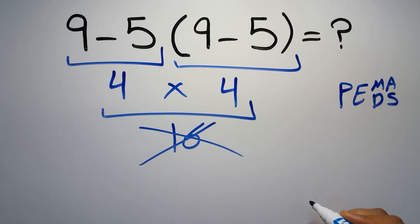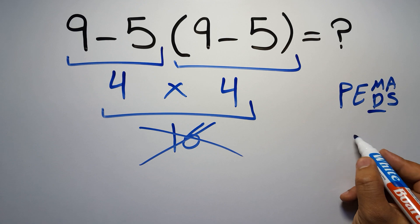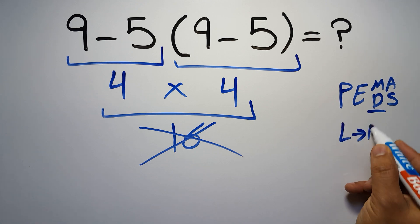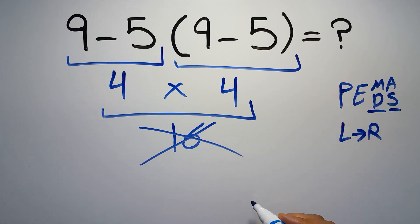and finally addition or subtraction. Remember that multiplication and division have equal priority and we have to work from left to right. And the same applies to addition and subtraction.